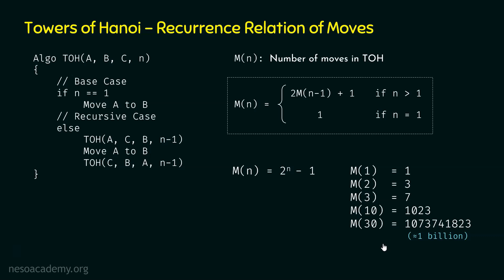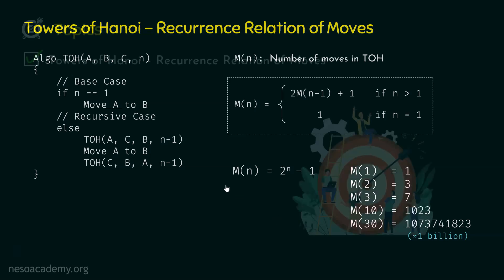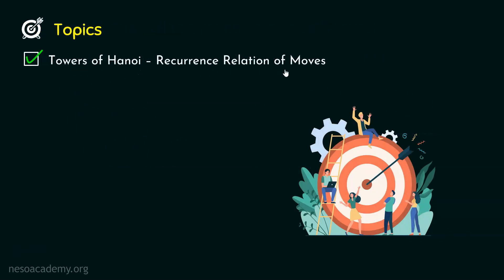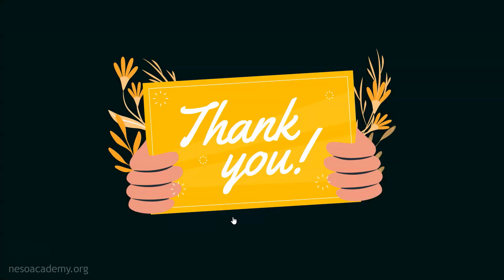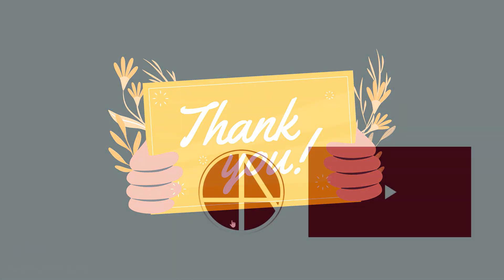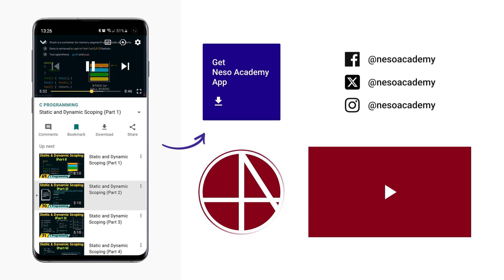So this is the problem of Towers of Hanoi, and we also got the formula to calculate the number of moves: 2^n − 1. We got this formula by solving the recurrence relation through the substitution method. We are done with this topic — Towers of Hanoi: recurrence relation of moves. Thank you for watching this presentation. See you in the next one.